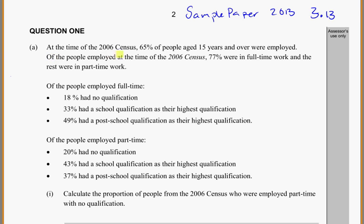So at the time of the 2006 census, 65% of people age 15 or over were employed. Of the people employed at the time, 77% were full-time, and the rest were in part-time work. That's a lot of information. Let's take a look at what else they're telling us here. Of the people employed full-time, we've got these different statistics, and for people part-time, we've got this.